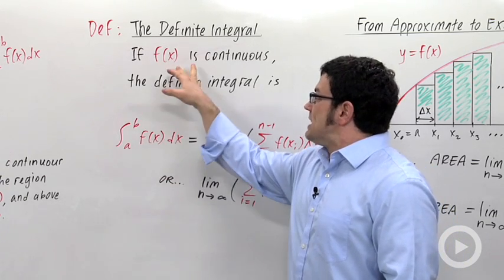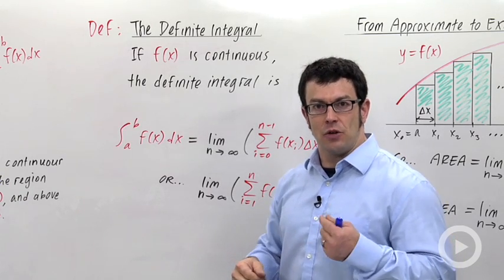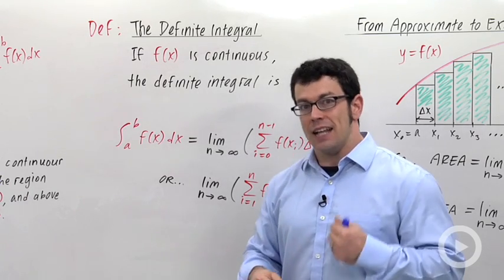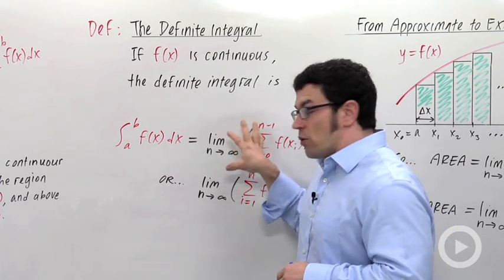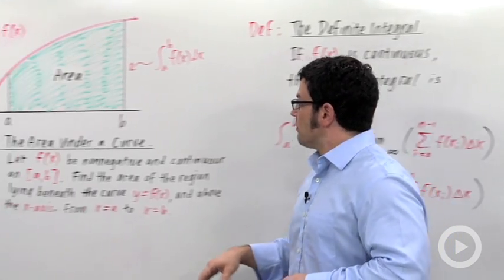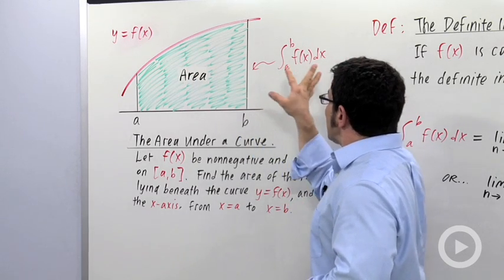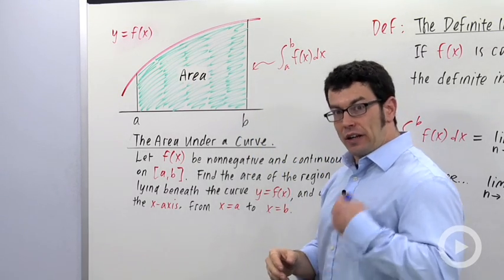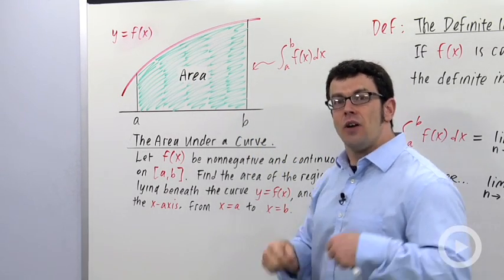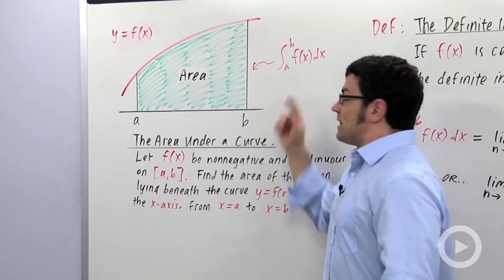Note here I didn't specify whether or not f(x) was non-negative. It just has to be continuous for this definition to work. But if f(x) is non-negative, then this value will exactly equal the area under the curve. So let's go back to our original picture. This area is exactly given by the definite integral if f(x) is non-negative, and that's why it's so important. We don't have to approximate anymore. We can get the exact value.